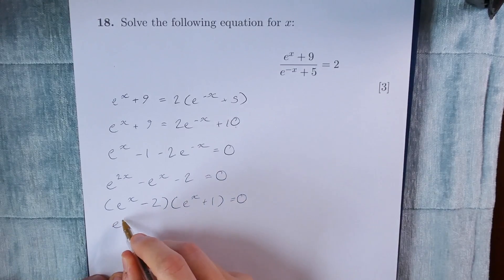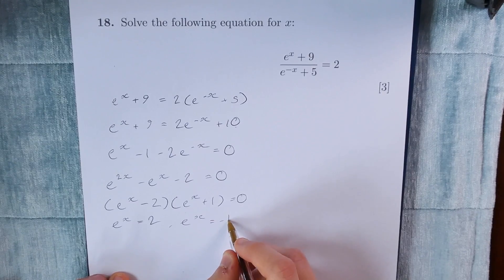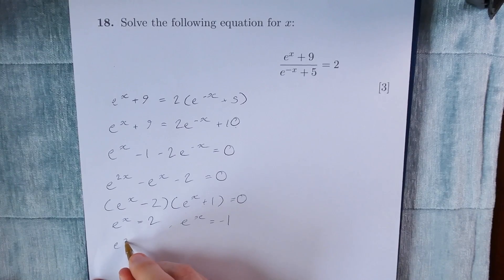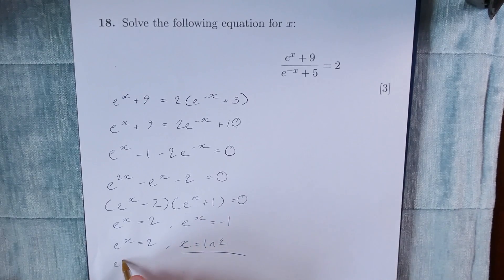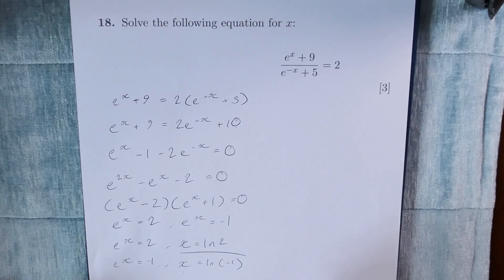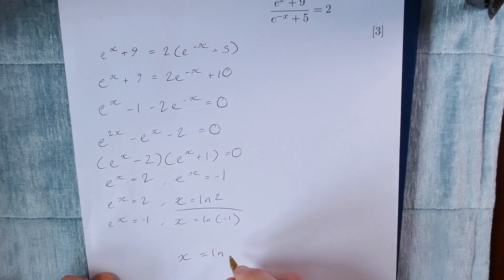That gives us two solutions for e to the x: e to the x equals 2, and e to the x equals minus 1. Now let's check the validity of these solutions. If e to the x is equal to 2, then x is equal to ln 2, which is a perfectly valid solution. However, if e to the x is equal to minus 1, then x would be equal to ln of minus 1, which in fact does not exist, as you can only take a natural log of a number greater than zero. Therefore, x equals ln 2 is our only valid solution.